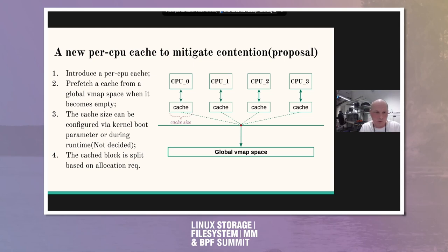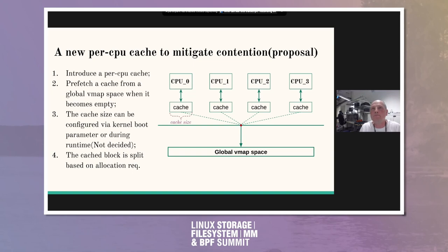Now let me talk about the proposal. I would like to propose a new per-CPU cache to mitigate contention. The first step is introducing a per-CPU cache. Then we prefetch from the global VMAP heap when the cache becomes empty. The cache size can be configured via a kernel parameter or changed at runtime, though that hasn't been decided yet. Then in the fourth step, the prefetched block — a chunk — is split based on the allocation request. Basically it's clipping: we clip the cache.